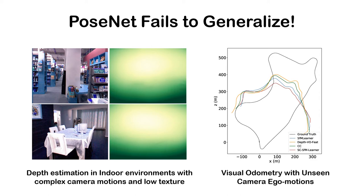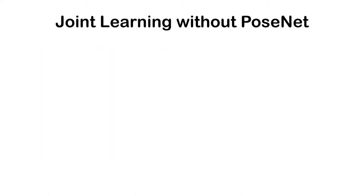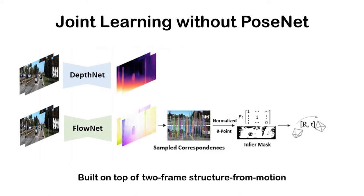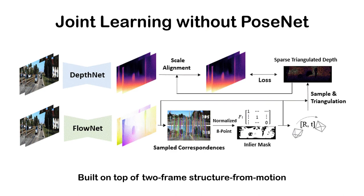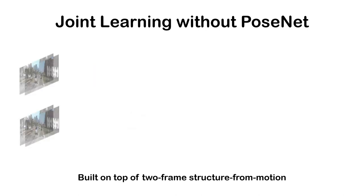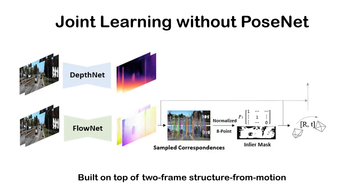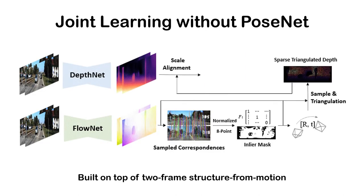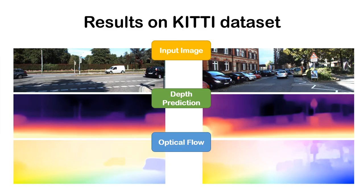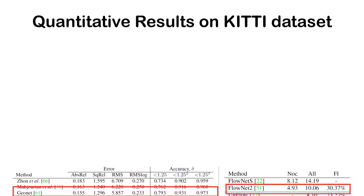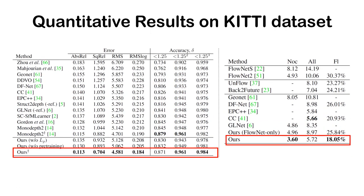Built on top of two-frame structure-from-motion, our method directly solves relative pose from optical flow correspondence and develops a unified system to jointly train monocular depth estimation along with a flow network. Our system produces accurate depth and flow maps and yields state-of-the-art performance on the KITTI dataset.